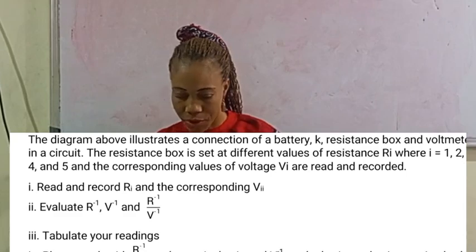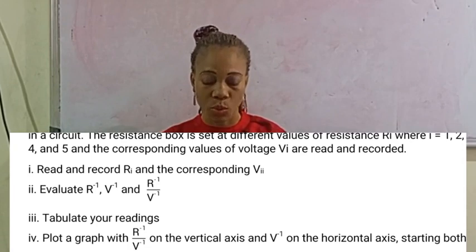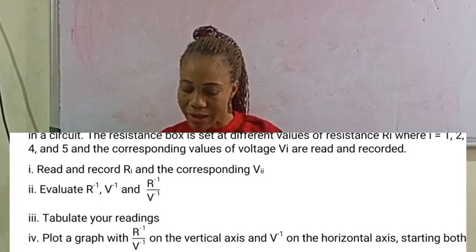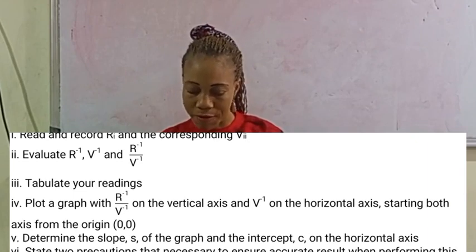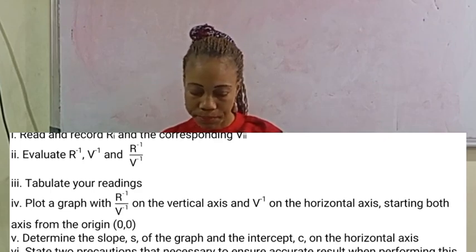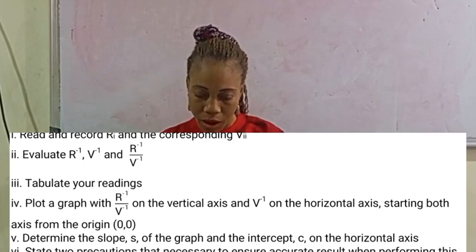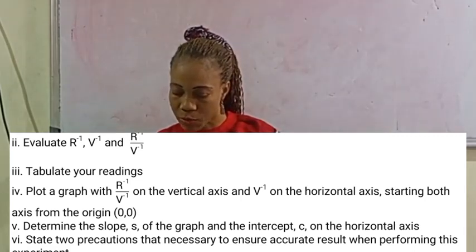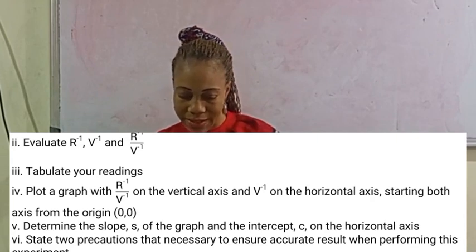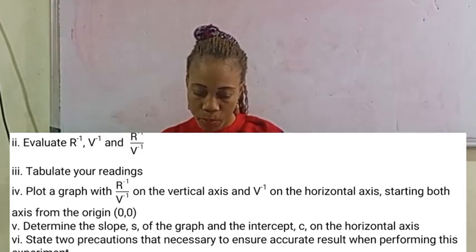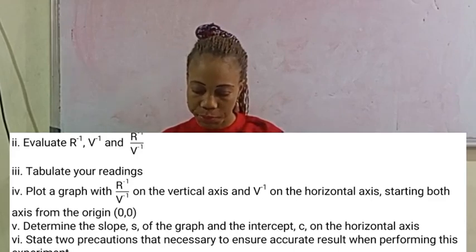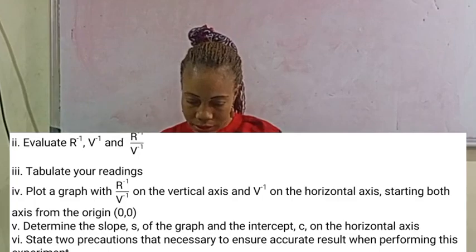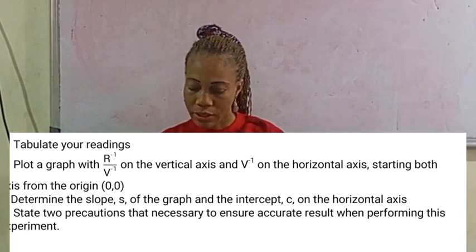What are you expected to do? First, read and record R_i and the corresponding V_i. Second, evaluate R^(-1), V^(-1), and R^(-1) over V^(-1). Third, tabulate your readings. Fourth, plot a graph with R^(-1) over V^(-1) on the vertical axis and V^(-1) on the horizontal axis, starting both axes from the origin. Fifth, determine the slope S of the graph and the intercept C on the horizontal axis. Finally, state two precautions necessary to ensure accurate results when performing this experiment.